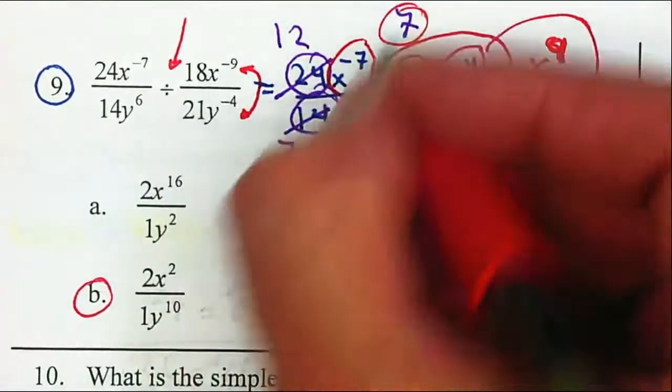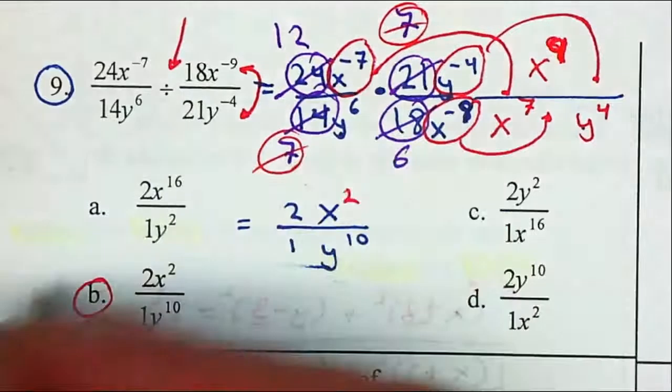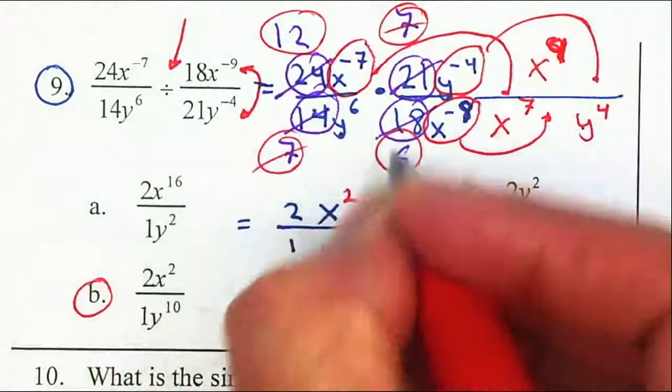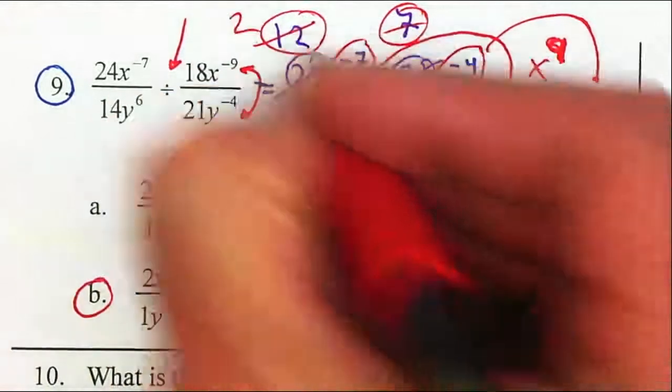Now I'm going to reduce my 7s, so they cancel out. And I'm going to reduce my 12 by 6, so it gives me 2 and that gives me 1.